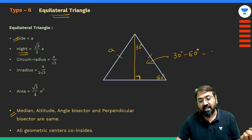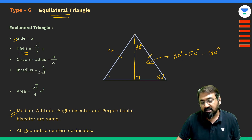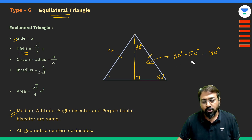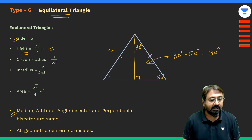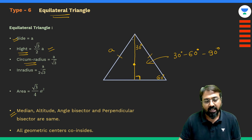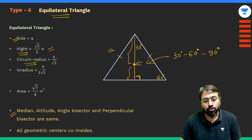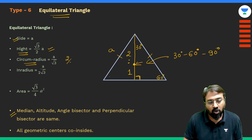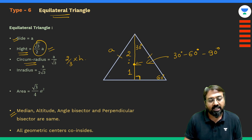This is a 30-60-90 triangle. If this side is 'a', then the side opposite to 30° should be a/2 and the height should be (√3/2)a. Based on that we get the relation: height = (√3/2) × side. The circumradius is two-thirds of the height — the circumcenter is also the centroid, and the centroid divides the median in the ratio 2:1. So the circumradius = (2/3) × height = a/√3.